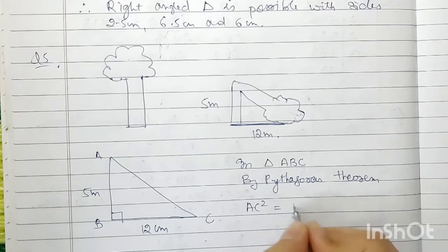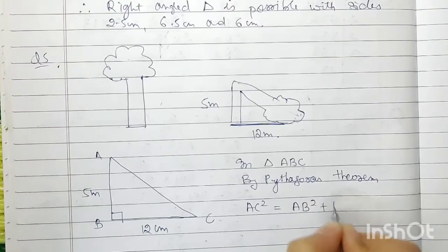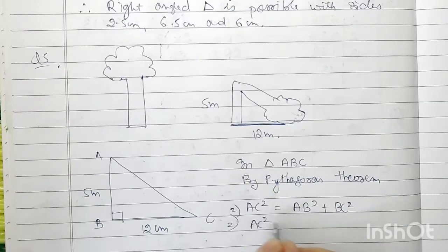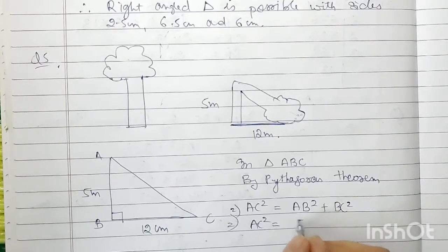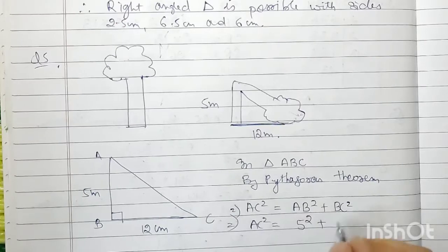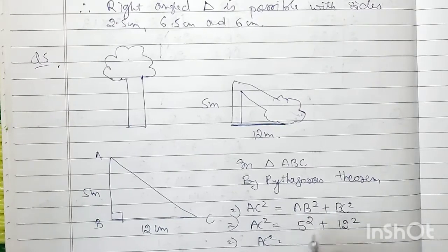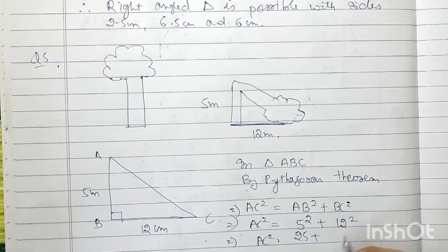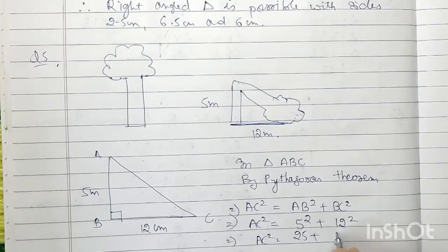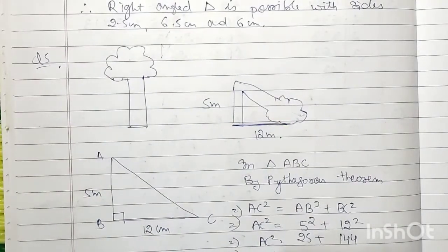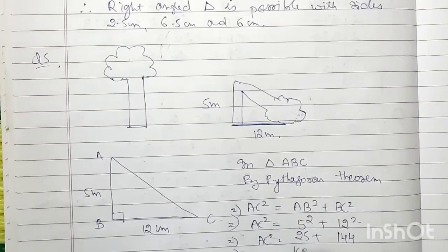AC² = AB² + BC². We have to find AC. AB is given as 5, so 5 squared, and BC is given as 12, so 12 squared. AC² = 25 + 144. Adding both we get 169.